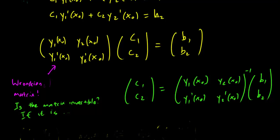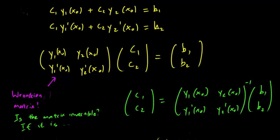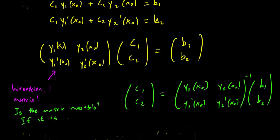So as you can see, if the matrix y1, y2, y1', y2' is invertible, we can solve for c1 and c2. And this is how the question of whether c1y1 plus c2y2 is the general solution is related to the question of whether y1, y2, y1', y2' is invertible or not.